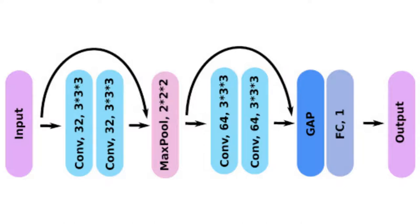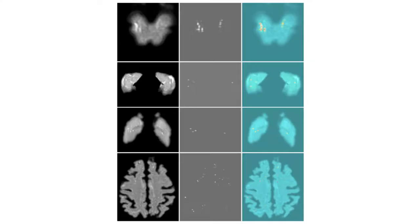Our approach is a deep learning algorithm based on convolutional neural network regression and is contingent on successful brain structure segmentation. In our work, we used three structure segmentations.